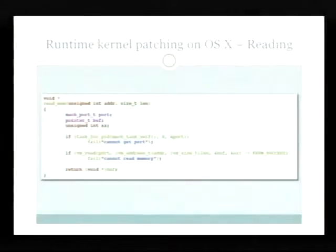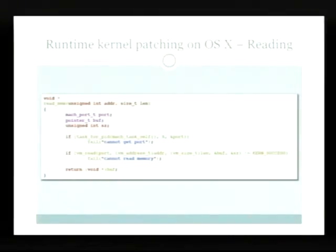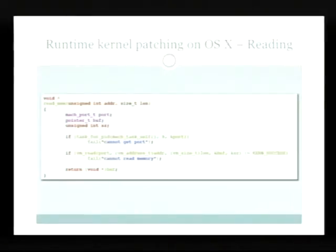In this code example — task_for_pid, mach_task_self, and zero — this is so that we can get a read and write pointer to the port in the kernel. So it's fairly simple: ask for task_for_pid for zero, and then we do vm_read on that port. Of course, this requires root access, as I'm sure all of you understand. But once we gain root access, we can use these commands to read and write to kernel memory.